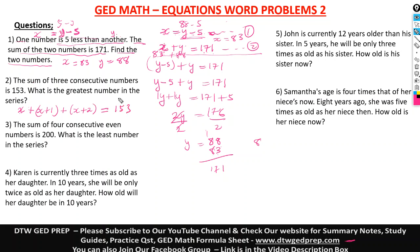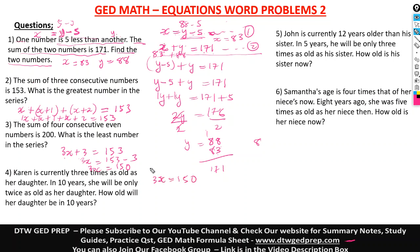We need to solve for X. Dropping the parentheses: X plus X plus one plus X plus two equals 153. Combining the X terms gives 3X — remember there's an invisible 1 in front of X. And 1 plus 2 is 3, so 3X plus 3 equals 153. Taking 3 to the other side: 3X equals 150. Dividing both sides by 3: X equals 150 divided by 3, which gives us 50.